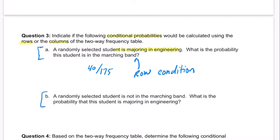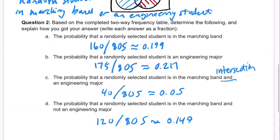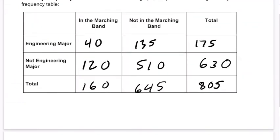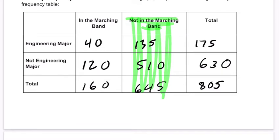Next: a randomly selected student is not in marching band. What is the probability that this student is majoring in engineering? So we know they're not in marching band — that means we look for this column. They're not in the marching band, so we are restricted to this column. That's our conditional probability.